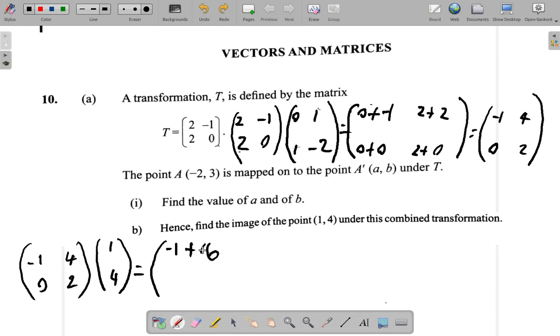And for the bottom row times column: 0 times 1 is 0, plus 2 times 4 is 8.